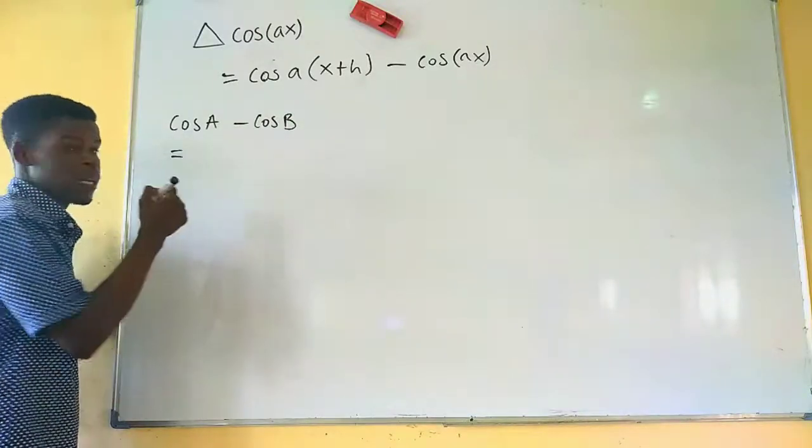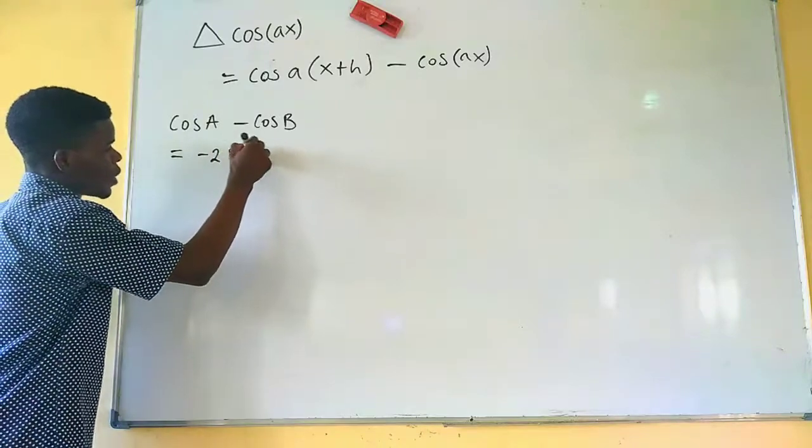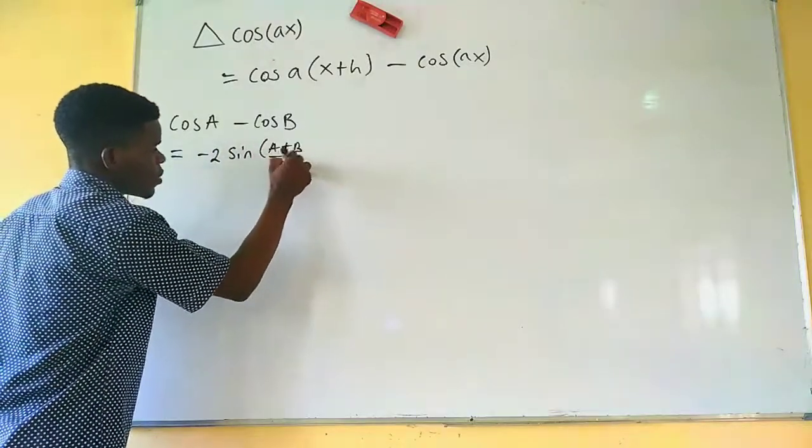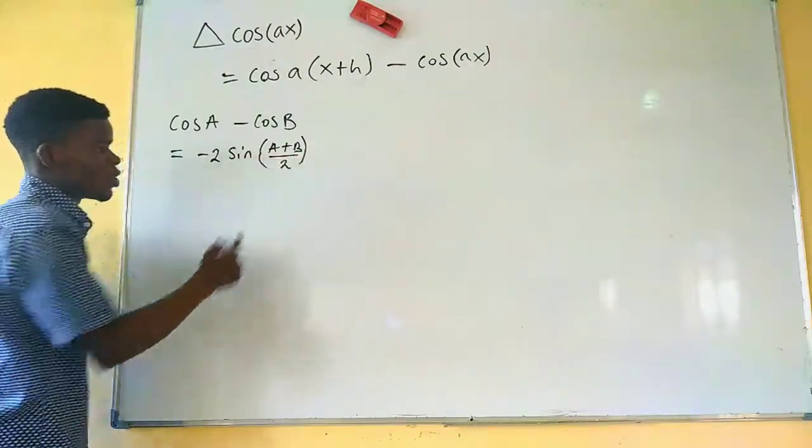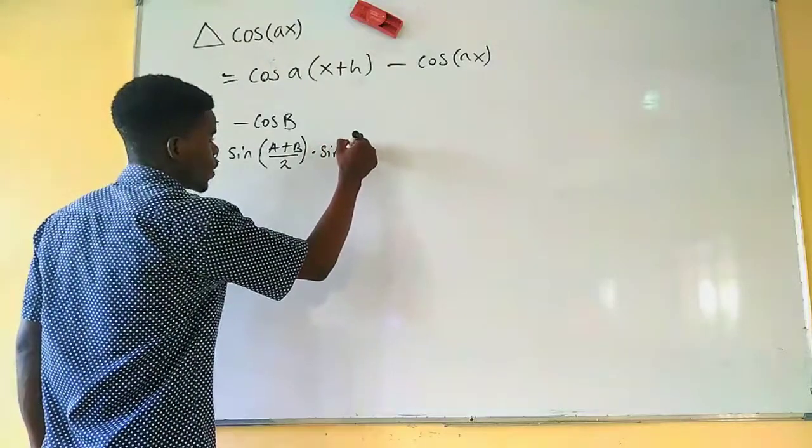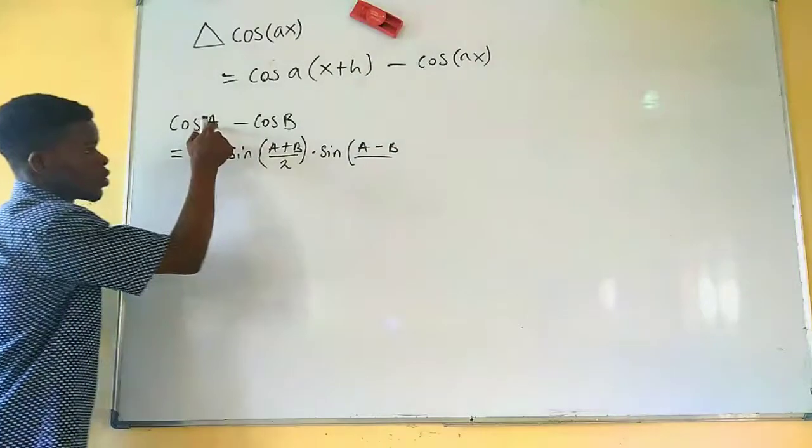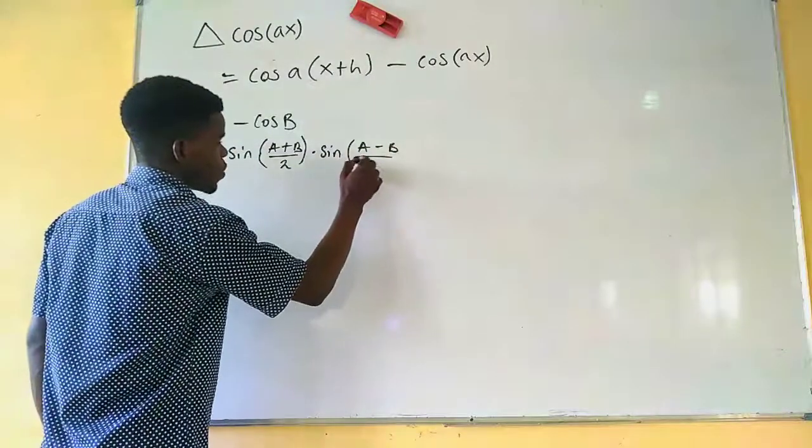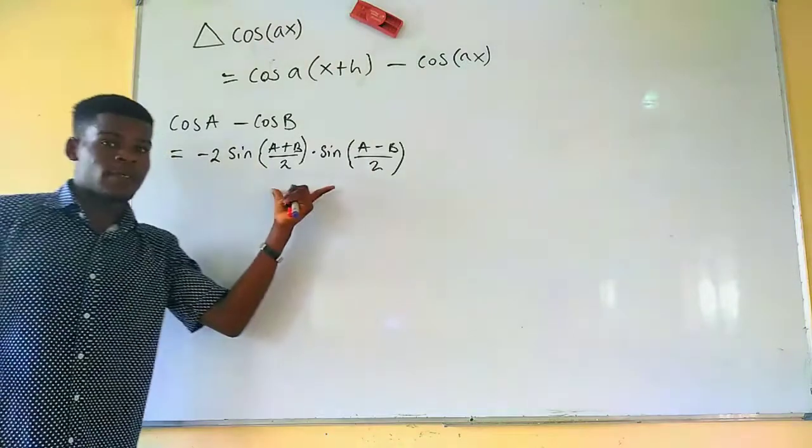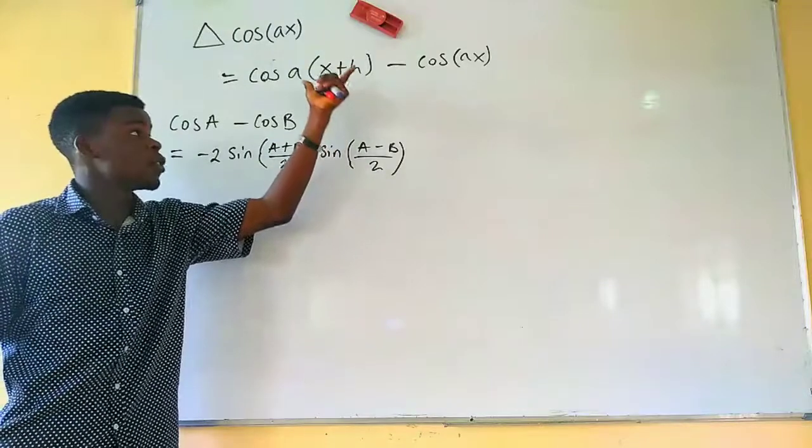We just have it to be the same thing as negative 2 times sine of the sum of the two angles, A plus B, you divide it by 2, and you multiply it with the sine of the difference of the two angles, where the first one comes first, divided by 2 as well. So, this is the same thing as this. So, we're just going to apply that right here, and we're going to solve this.